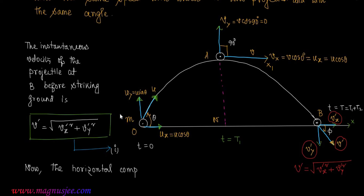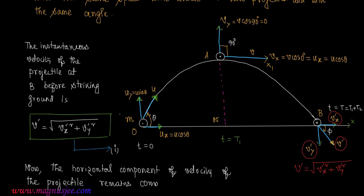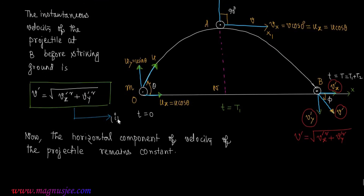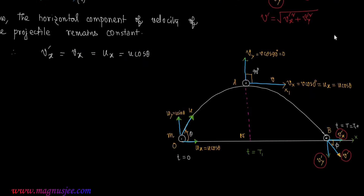The horizontal component of the velocity of the projectile remains constant because there is no component of acceleration due to gravity in the horizontal direction. There is no acceleration in the horizontal direction for the motion of the projectile. Therefore, Vx prime = Vx = Ux = U cos theta.